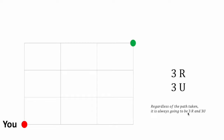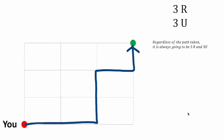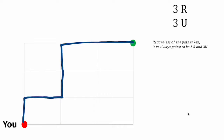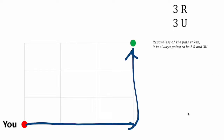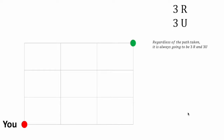Don't believe me? Consider some of the following paths. Here we have two right moves, two up moves, one right move, and then one up move — three rights and three ups. How about another? One up move, one right move, two up moves, and then two right moves — once again, three rights and three ups. Let's try one more: three rights followed by three ups — of course, three rights and three ups. And the same repeats for all other paths.